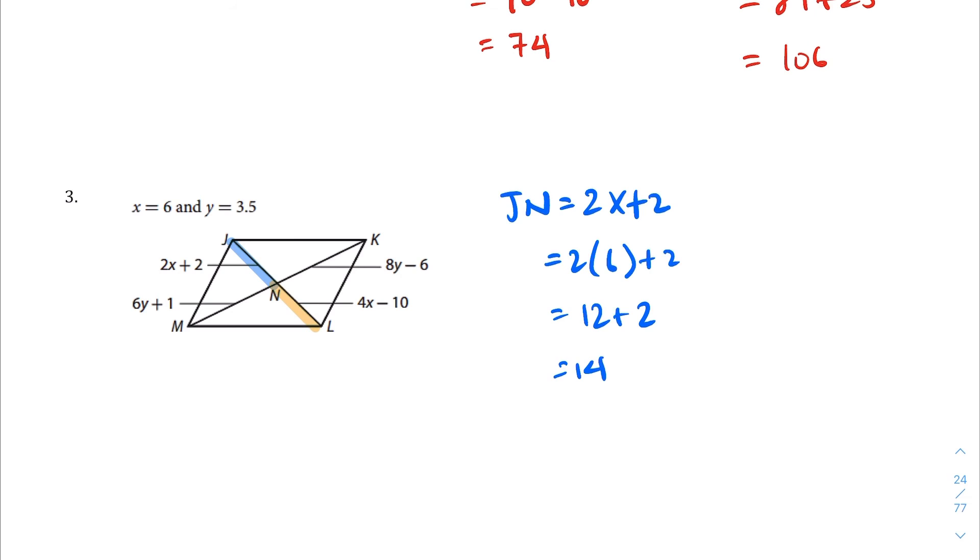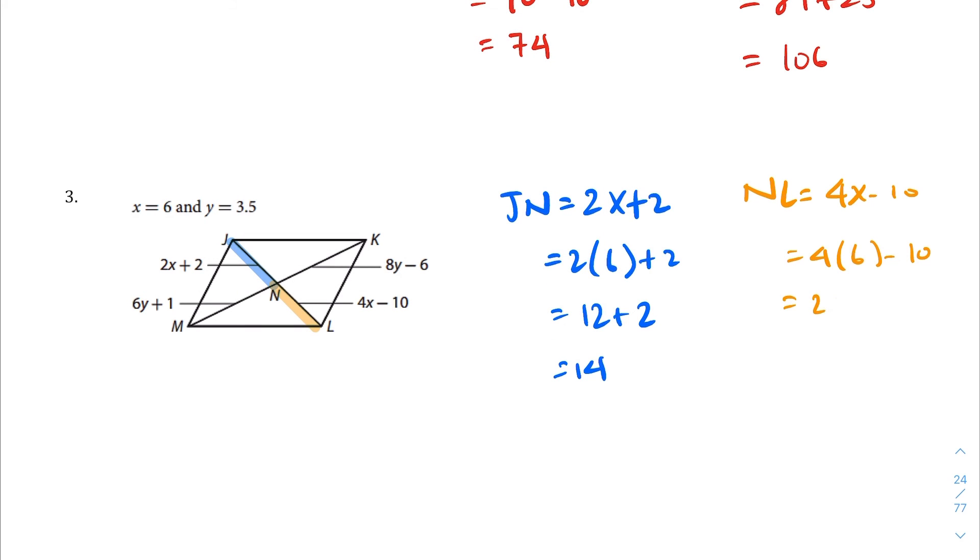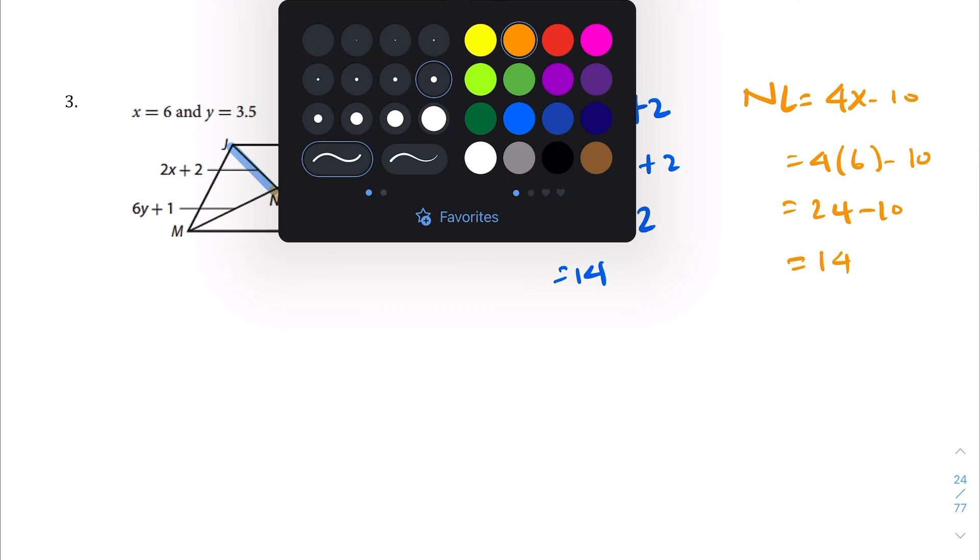So NL is 4x plus 10, 4 times 6 plus 10. Oh sorry, it was minus 10, I didn't copy it correctly. 4x minus 10, and I wrote 12, why did I do that, what's going on here. 24 minus 10 equals 14. So those two segments equal each other, which is exactly what we wanted.